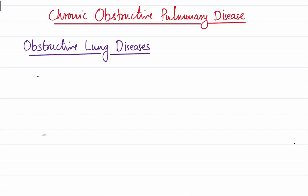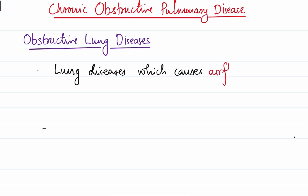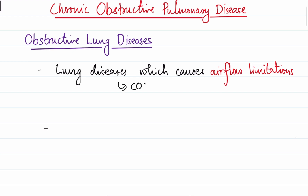In this video we'll be discussing chronic obstructive pulmonary disease, and by the end we'll be covering emphysema. Before moving on to COPD, what are obstructive lung diseases? Obstructive lung diseases are diseases which limit airflow. Examples include COPD, asthma, bronchiolitis, and bronchiectasis.